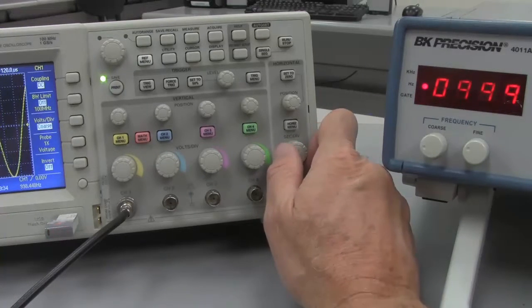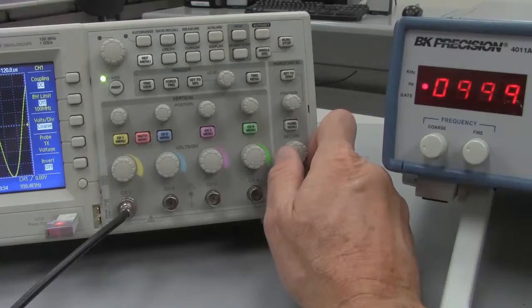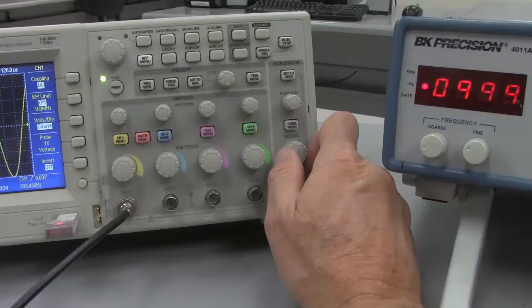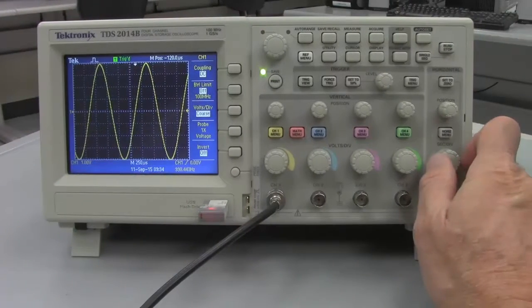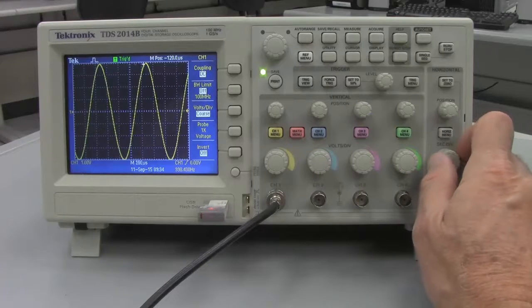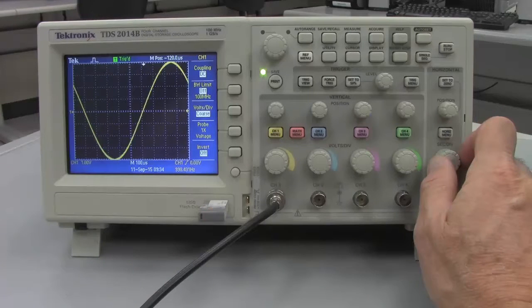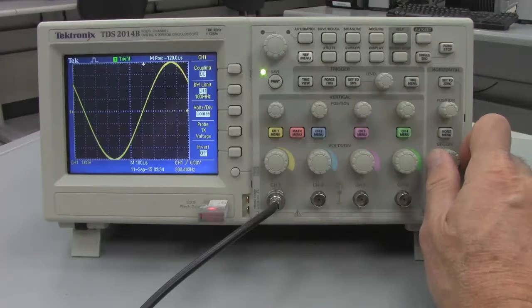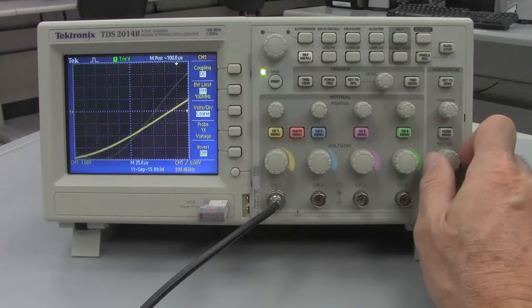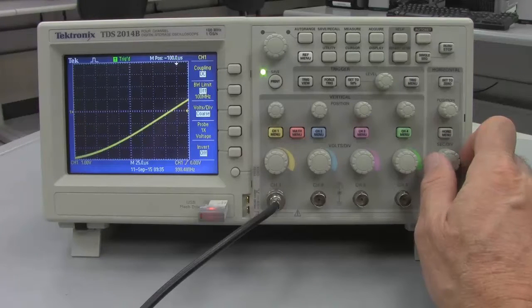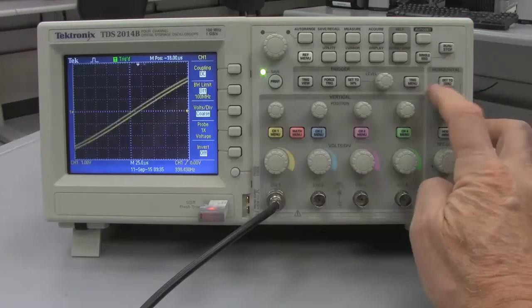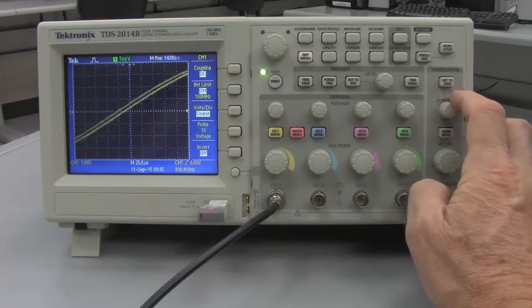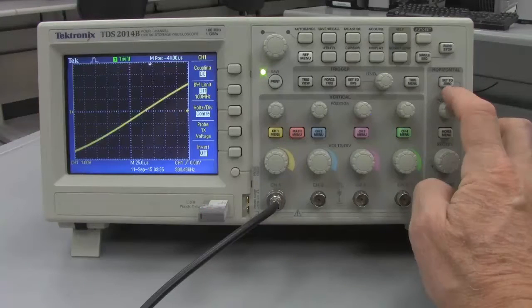It came up at 500 microseconds per division, and we can adjust that. We can make it so that there are fewer microseconds per division, which has the effect of expanding the sine wave. Continuing that way, we can expand the sine wave as much as we want to see and focus in on a certain part of the sine wave. And if we want to see another part of the sine wave, we can then position it back and forth, turning the horizontal positioning knob.